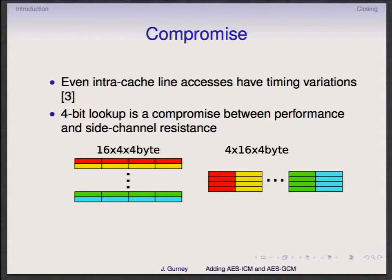Adding this lookup table approach improves the software implementation significantly — instead of iterating 128 times, you access memory far less often. There are performance versus security tradeoffs you really have to decide on: how much leakage do you want versus how fast you want to go. You can make things extremely secure, but if it runs at 10 megabytes per second nobody's going to use it. Slower systems are also a little more easily attacked.